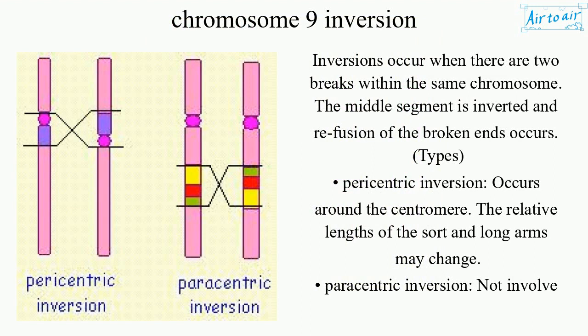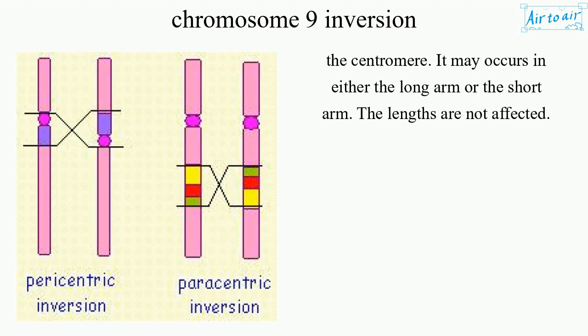Pericentric inversion occurs around the centromere, and the relative lengths of the short and long arms may change. Paracentric inversion does not involve the centromere; it may occur in either the long arm or the short arm, and the lengths are not affected.